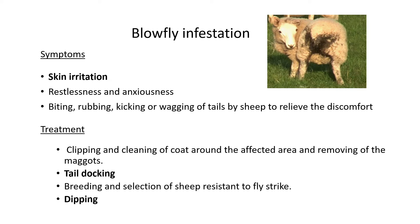Treatment includes clipping the wool around the rear area so there's no soiled wool to attract flies, keeping the skin clean. Tail docking is also practiced — farmers cut the tail off so it can't wag and spread urine and faeces over the buttocks area. Other preventive measures include breeding sheep resistant to fly strike, and dipping the outside of the animal's body to deter flies.